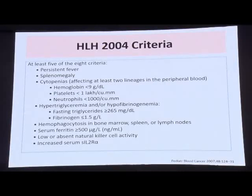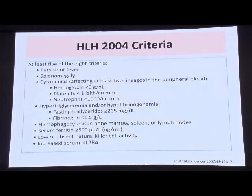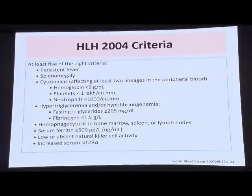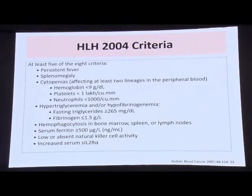Initially, the criteria applied for genetic forms of HLH was also applied to macrophage activation syndrome in pediatric rheumatological conditions, since the pathogenesis was thought to be the same. However, the last two criteria — natural killer cell activity and increased serum soluble IL-2 receptor alpha — are not measured in all routine labs. Additionally, the thresholds of platelets less than 1 lakh, neutrophils less than 1,000, and fibrinogen less than 1.5 g/L represent very advanced-stage disease.